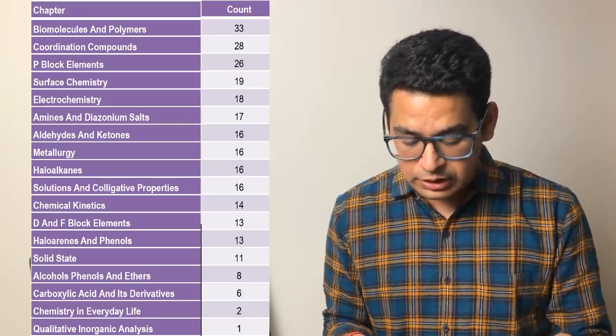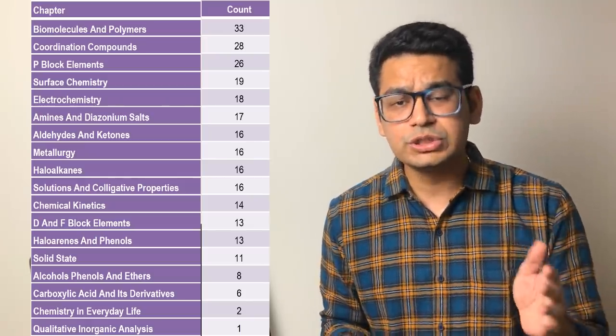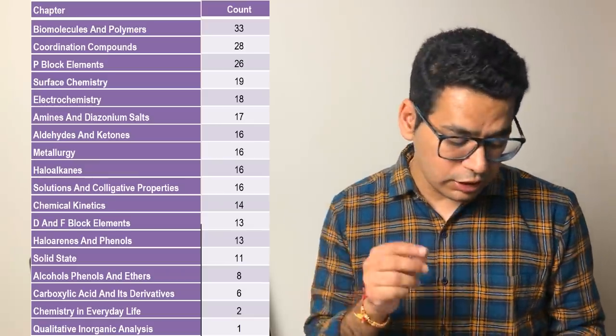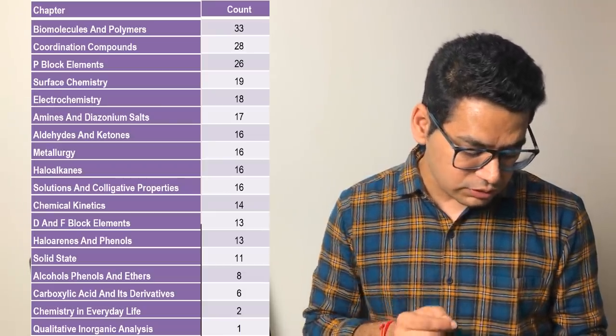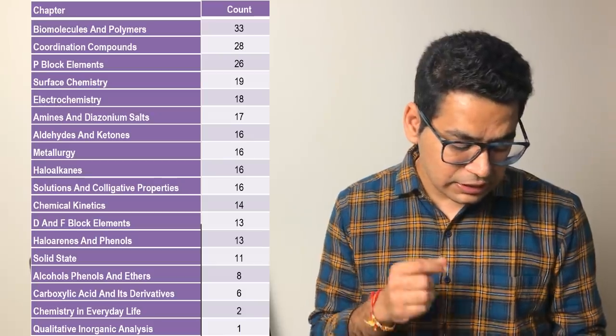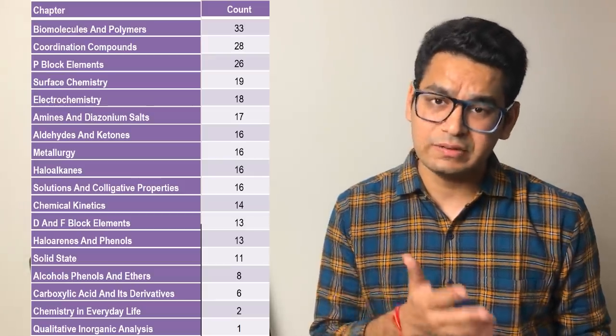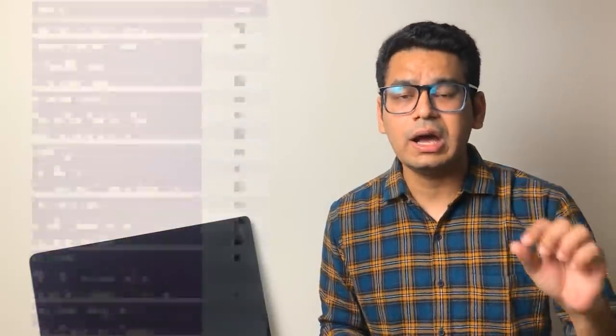Next big chapter of class 12th is coordinate compounds or coordination compounds which has a probability of almost 1.75. Two questions almost come. So in any question set, there is hope that two questions come from coordination compounds. Now you can go and scroll down the list - P block elements, surface chemistry, electrochemistry, amines, aldehydes ketones, metallurgy, haloalkanes and all this. So 12th obviously is a little bit bigger as compared to class 11th because chapters are more, detailing is more. So 12th is always more important in your chemistry portion.